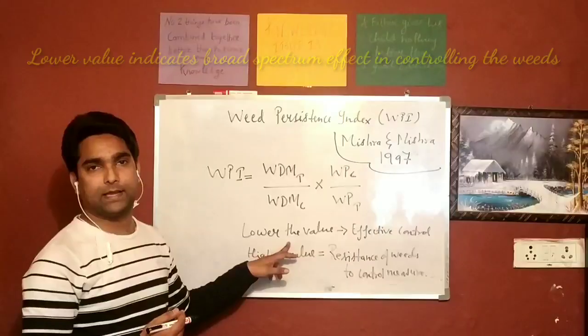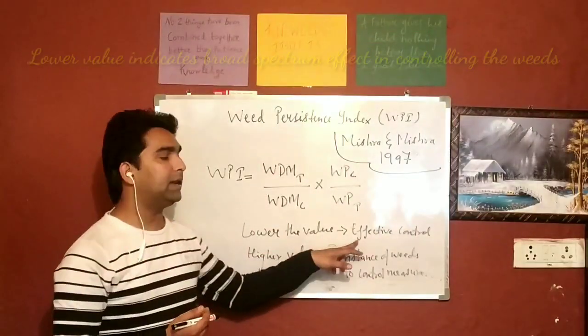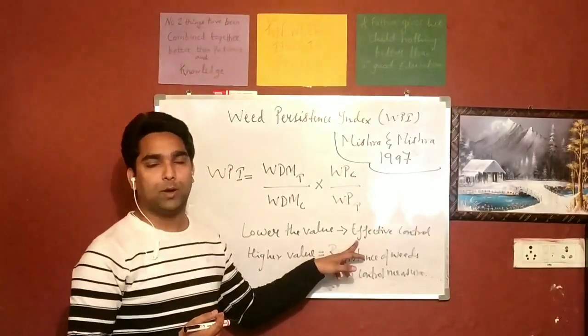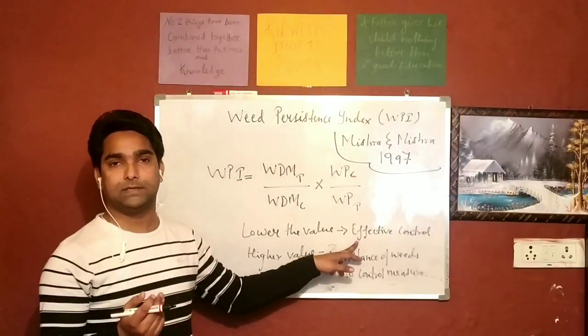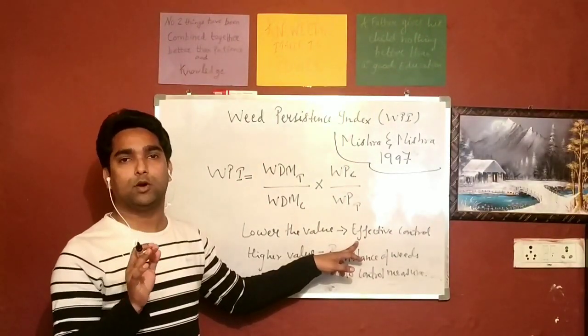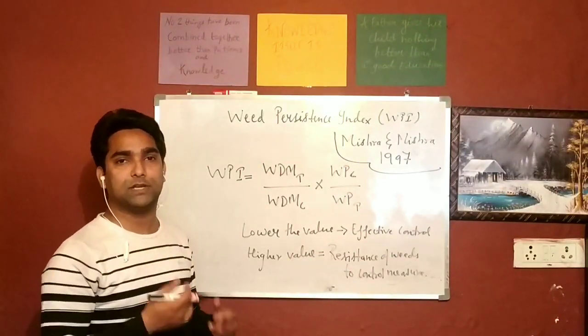But if you have a lower value of WPI, it is simple. It indicates that yes, it is an effective control. So if you have any treatment or any herbicide, if you want to check whether it is effective or not, it is one of the parameters which can be used.